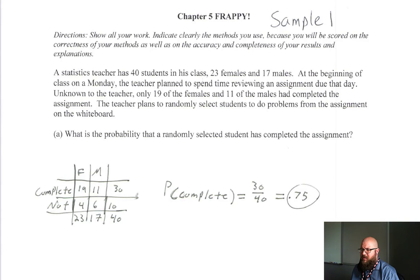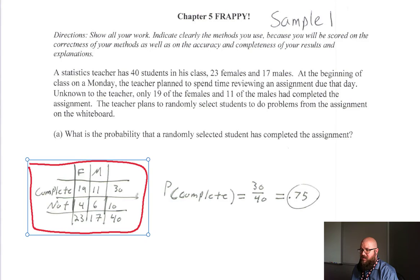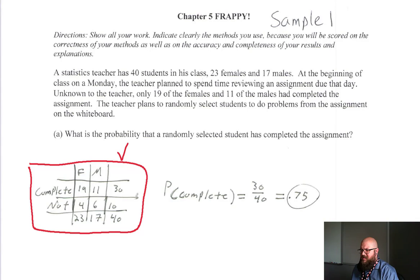In Part A it asks: what is the probability that a randomly selected student has completed the assignment? To start, we definitely needed the two-way table listed, which in this first sample is all good. They did the right job putting the proper values in the proper places for complete and not complete, dealing with females and males. The proper probability calculation looks correct — they took 30 over 40 and came up with 0.75.